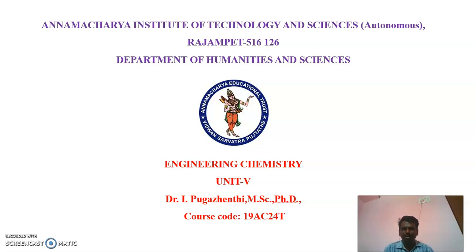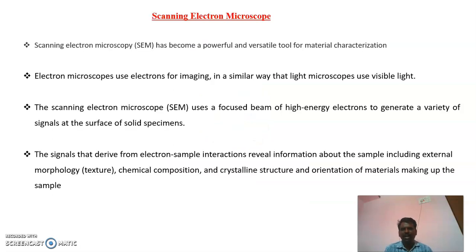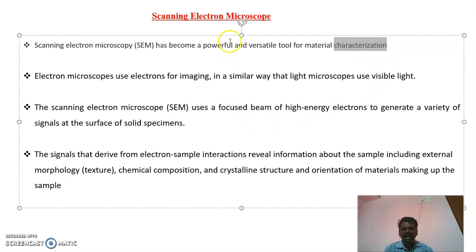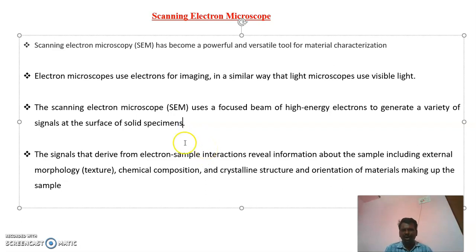Good morning. Today we are having two topics to discuss. One is scanning electron microscope, which is a technique used for material characterization. High energy electrons are used to generate a variety of signals from the solid surface. This scanning electron microscope is used to analyze surface morphology and chemical composition of solid materials.